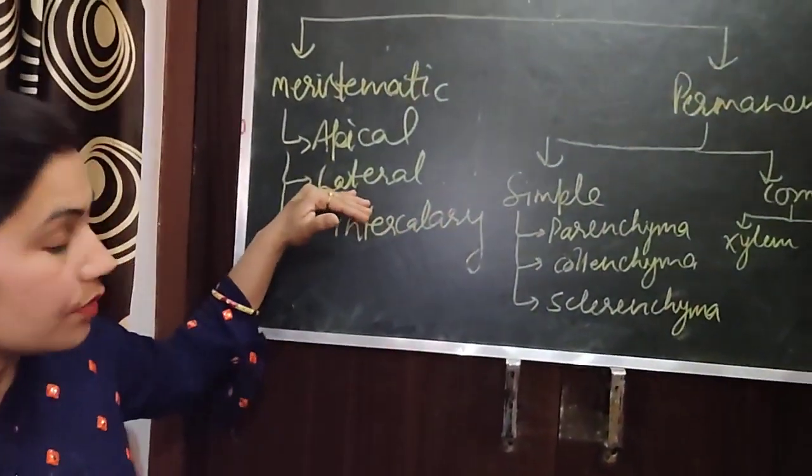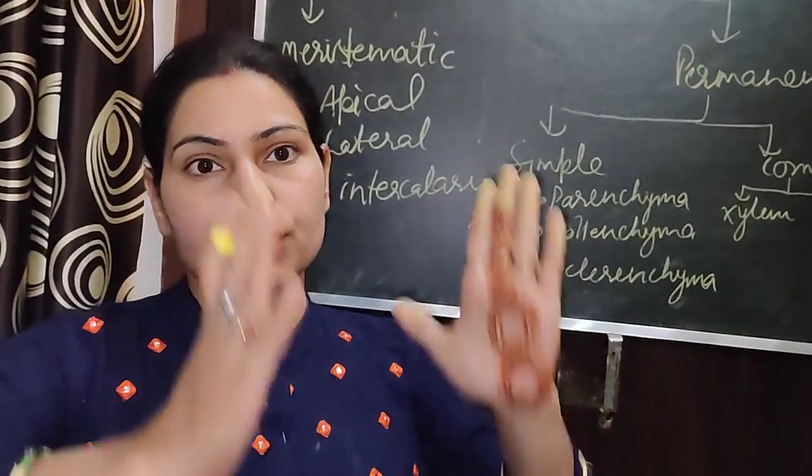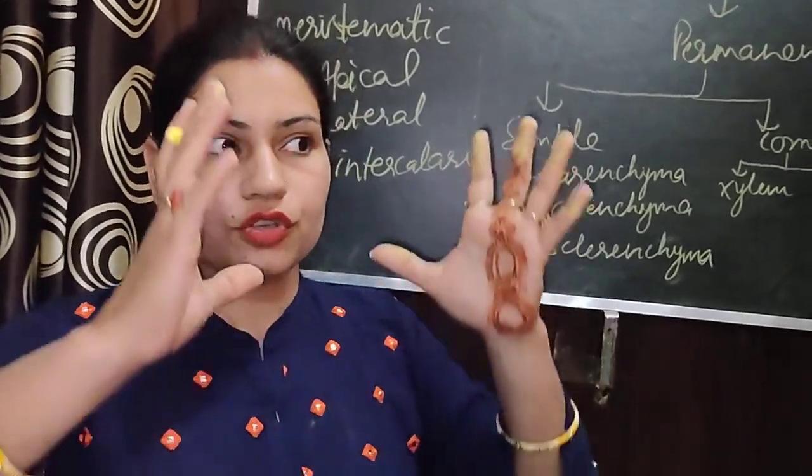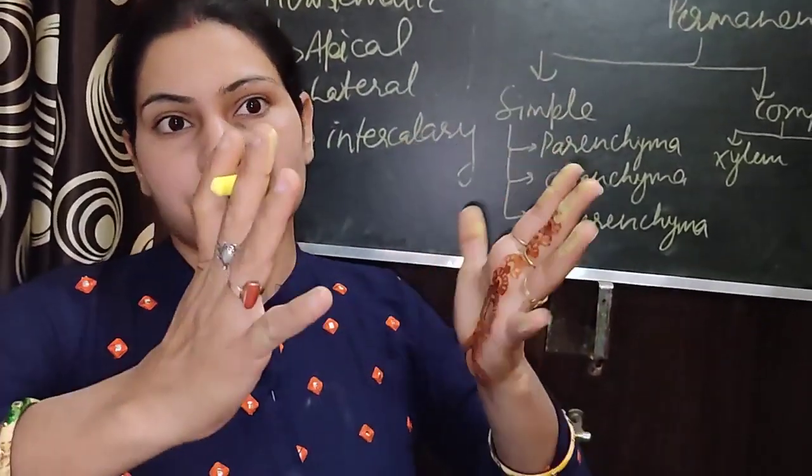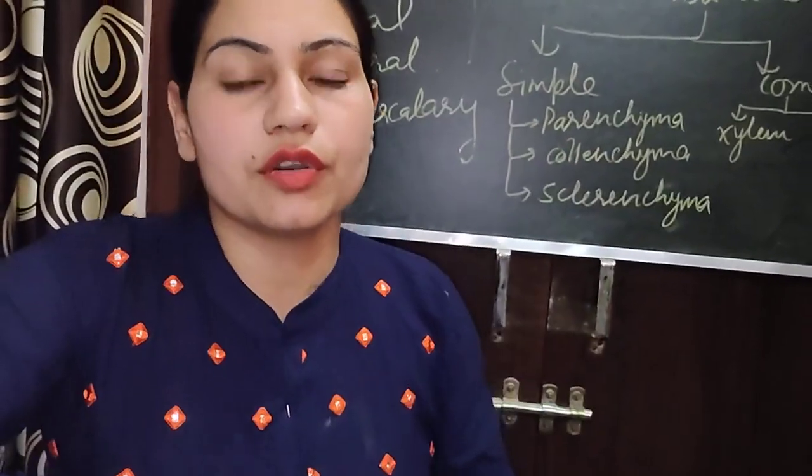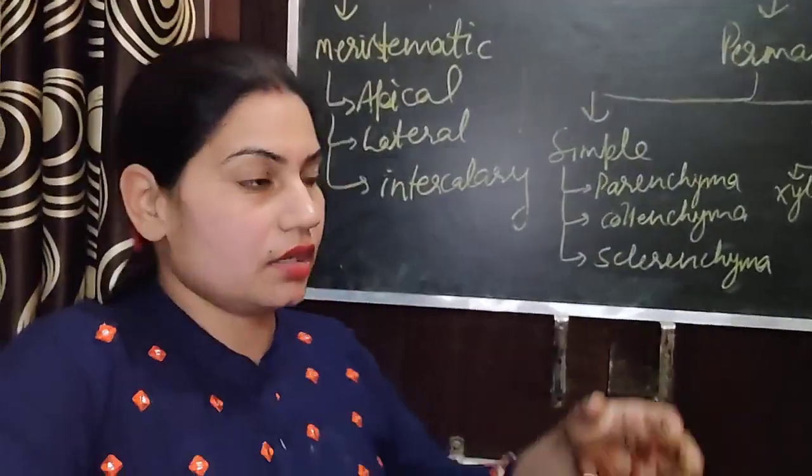Lateral meristem, they are present at the side corners of the plant. The bark is present on the corners. It enables the plant to increase in width or girth.